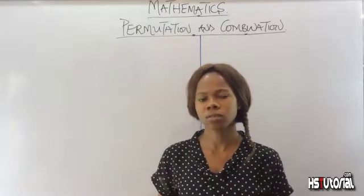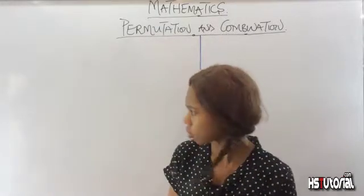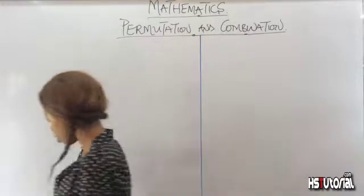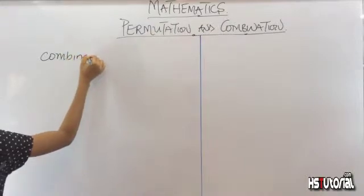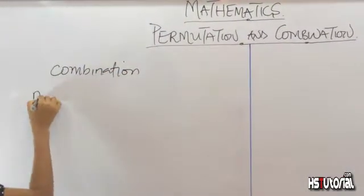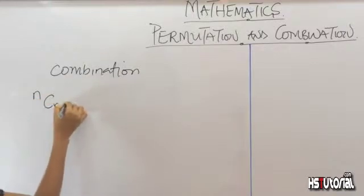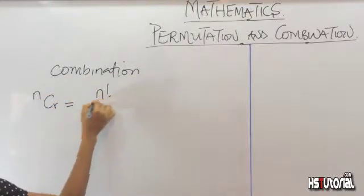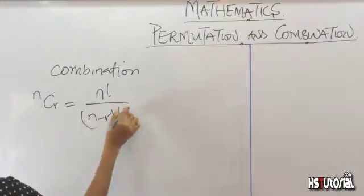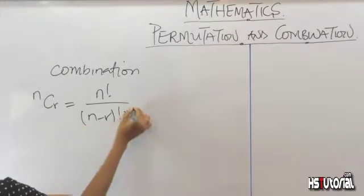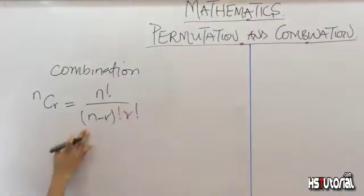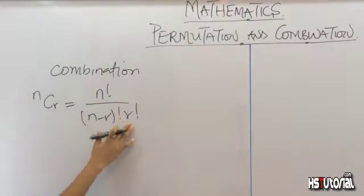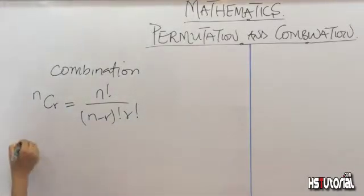So what is the difference in the mathematical formula? The formula for combination is: n combination r equals n factorial, all divided by (n minus r) factorial times r factorial.